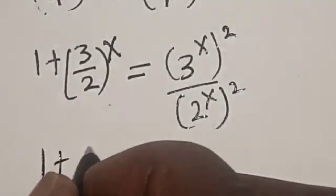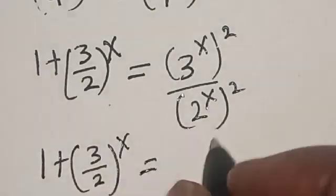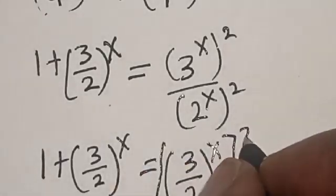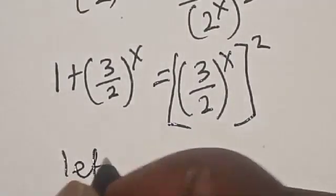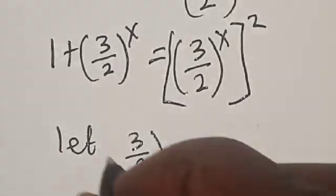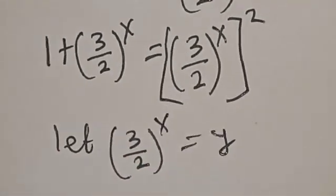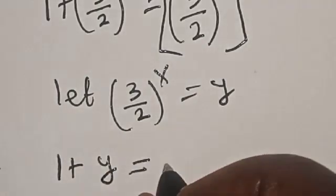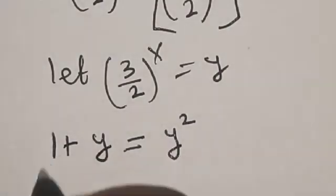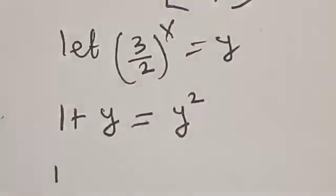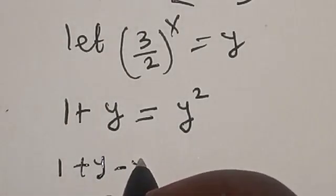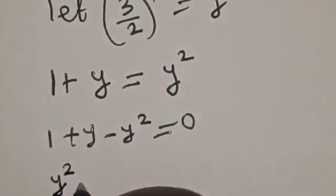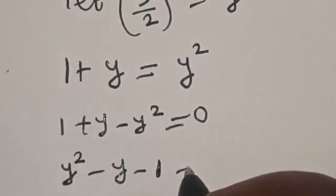So 1 plus (3 divided by 2) raised to power s is equal to (3 divided by 2) raised to power s, all squared. Let's let 3 divided by 2 raised to power s equal y. Then we have 1 plus y equals y squared. Rearranging, 1 plus y minus y squared equals 0.